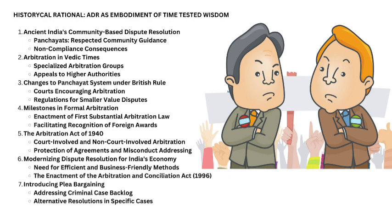Milestones in formal arbitration: in 1889, India enacted its first substantial arbitration law, following the British Arbitration Act. Over time, additional laws facilitated arbitration and recognition of foreign awards. The Arbitration Act of 1940 allowed both court-involved and non-court-involved arbitration. It offered protection to agreements, empowered courts to address misconduct, and modify or set aside awards when necessary.